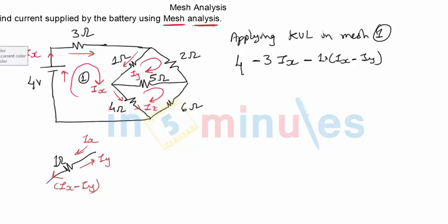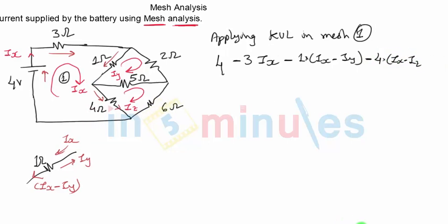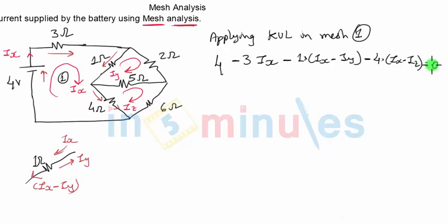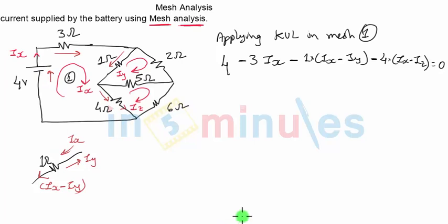So the drop will be IX minus IZ will flow in downward direction, in the same direction in which I'm traveling. So it will be minus four into IX minus IZ. And this will be equal to zero because we come back to the same point from where we had started. So that's my first KVL equation I've got.